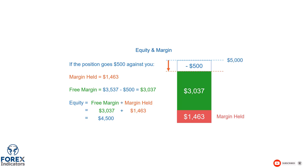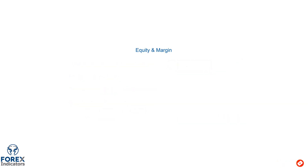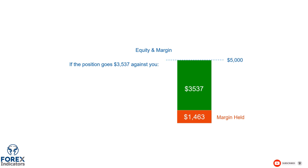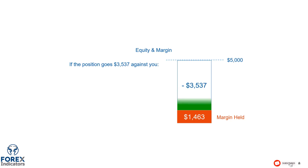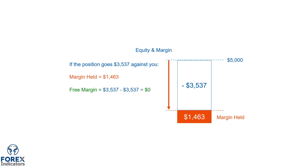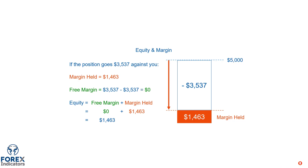Now let's take a look at what would happen if the position really turns against you, which is not ideal, but could happen. If the position went $3,537 against you — so effectively all of the free margin — the margin held would still remain the same. However, the free margin would go to zero, and it would mean that if you were to close the position, the equity remaining would be $1,463. If you do not close the position, your broker will send you what is called a margin call notice. And if the position doesn't improve, or if you don't add additional funds to your account, your position will be automatically stopped out by the broker.